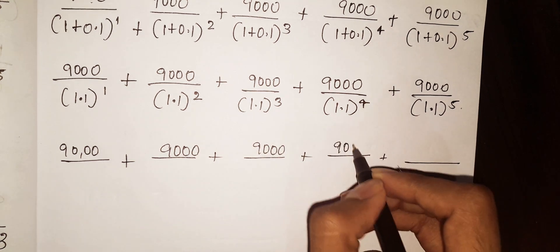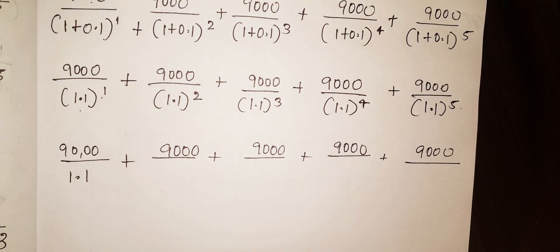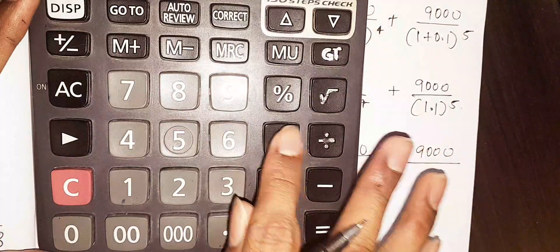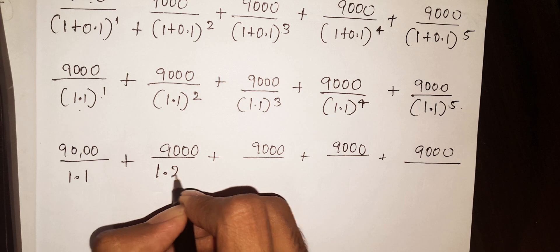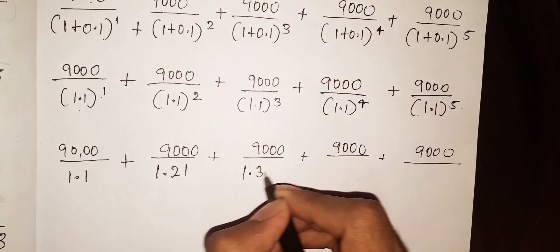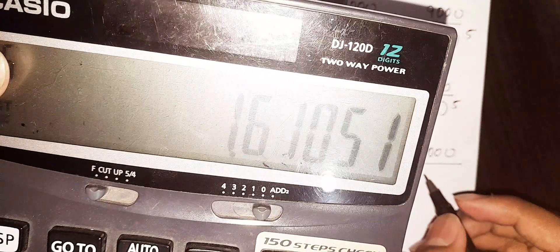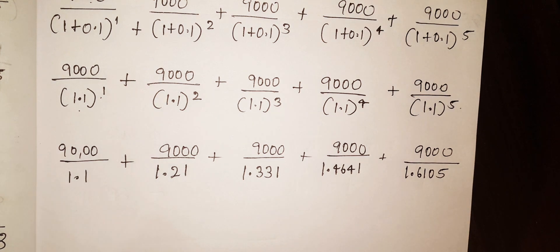So the same 9000, 9000, 9000 each year. Anything to the power of 1 is the same. The second year denominator is 1.1 to the power of 2, which equals 1.21. The third year is 1.331, the fourth year is 1.4641, and the fifth year is 1.6105. This is how we divide.